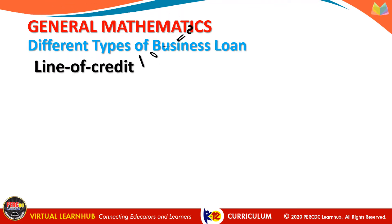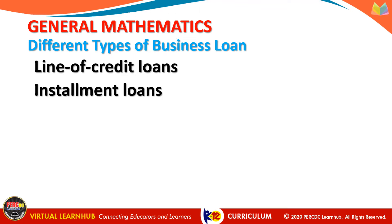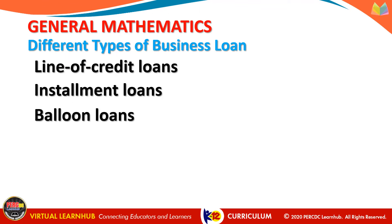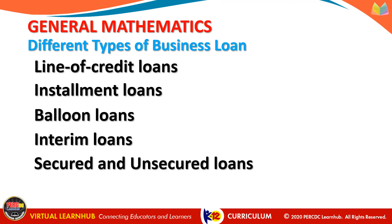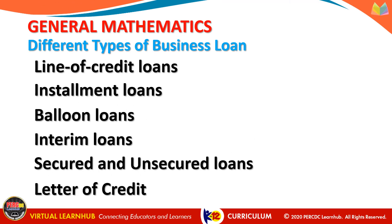To summarize, the different types of business loans we discussed are: line of credit loans, installment loans, balloon loans, interim loans, secured and unsecured loans, and lastly, the letter of credit.